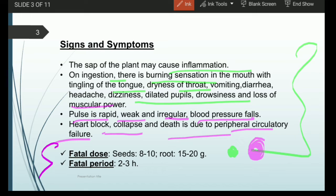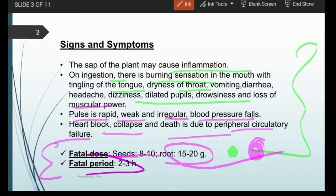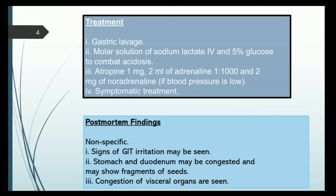Heart blockage, collapse, and death can also be observed due to peripheral circulation failure. The fatal dose for the seed is 8 to 10 grams, whereas for the root it is 15 to 20 grams — more than enough to cause death. The fatal period lasts from two to three hours.